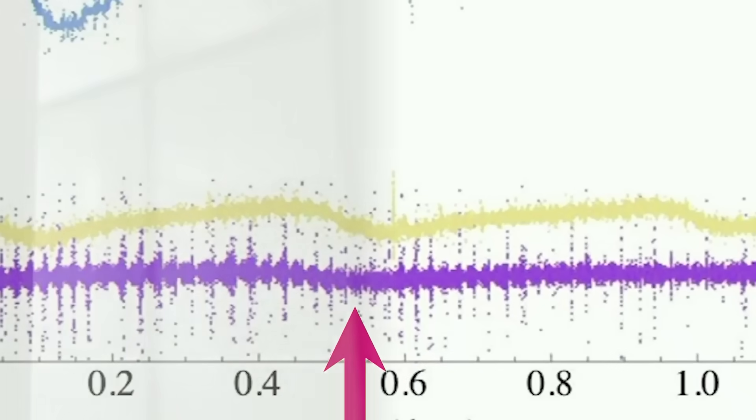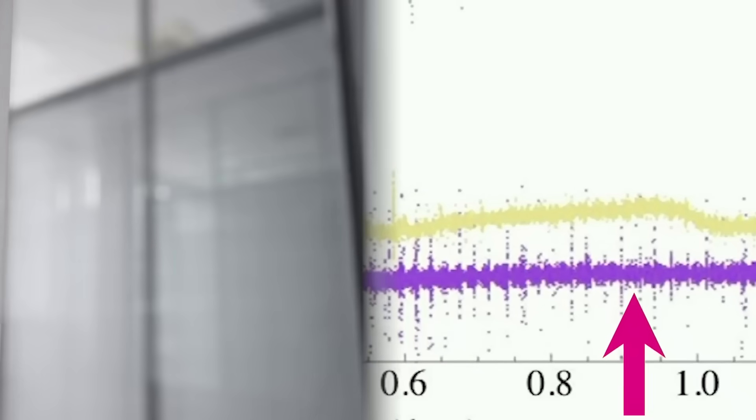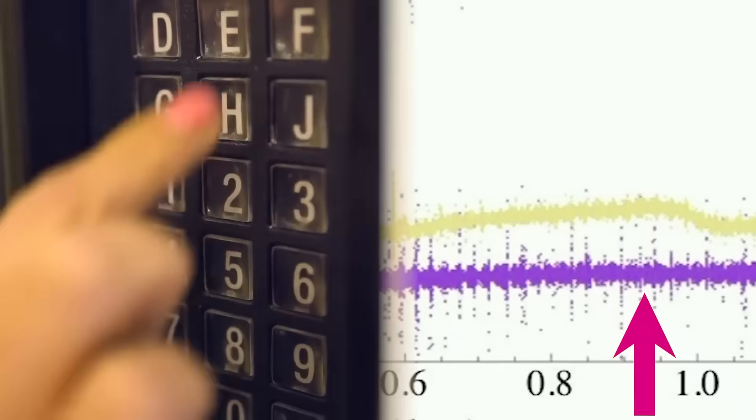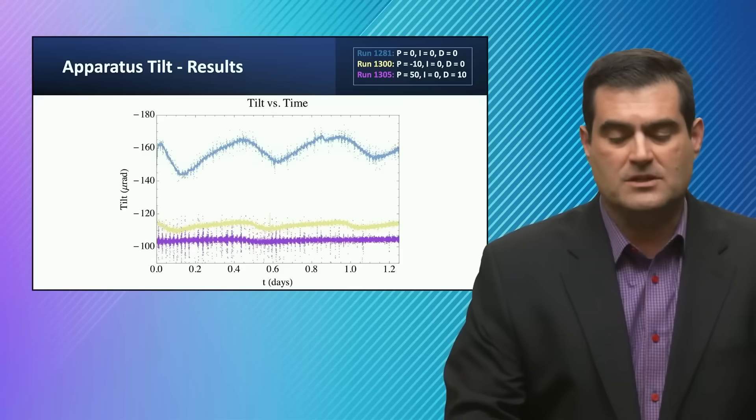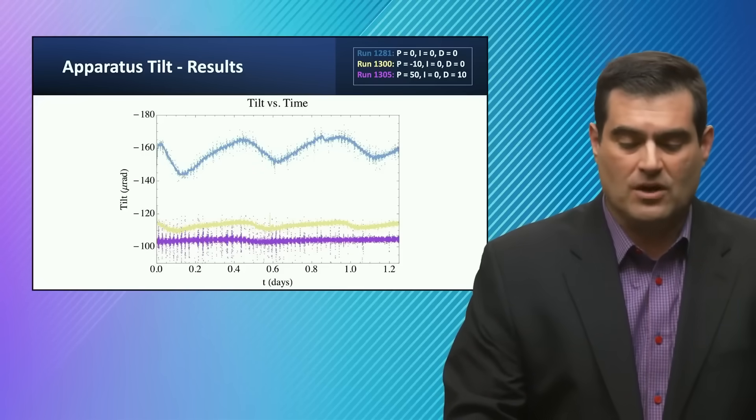You see the little interruptions that look like hash in the data—those could be from people coming in the building, going out of the building. There's some periodic things. It could be from everything from interference from Wi-Fi to other effects that can be filtered out.